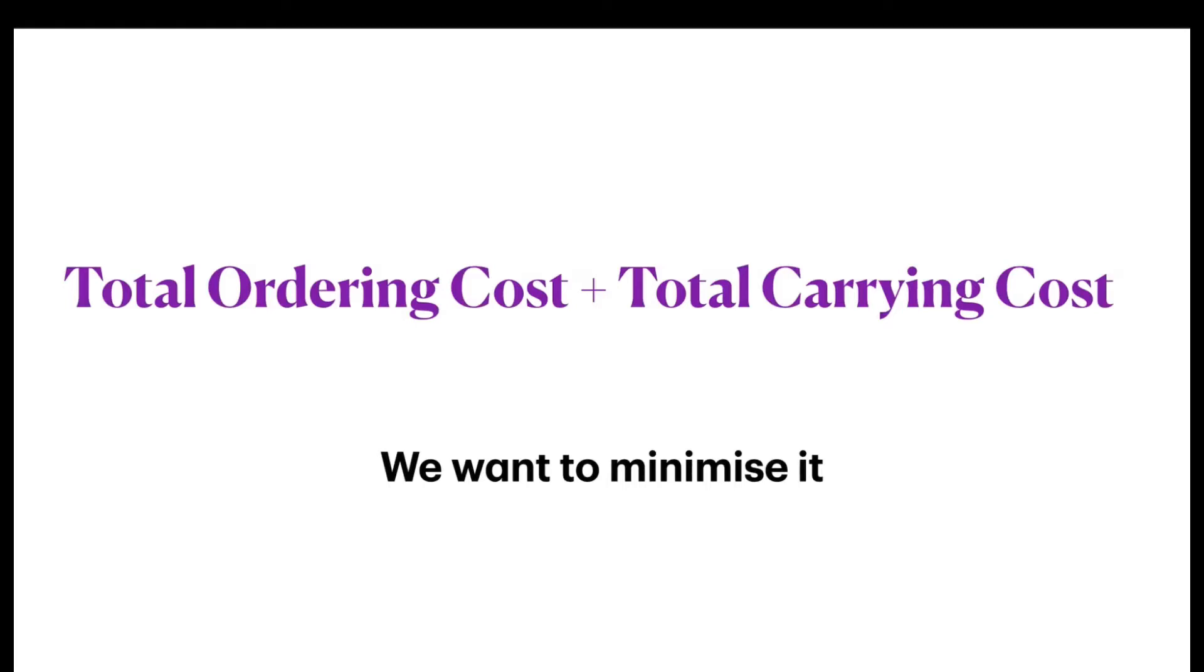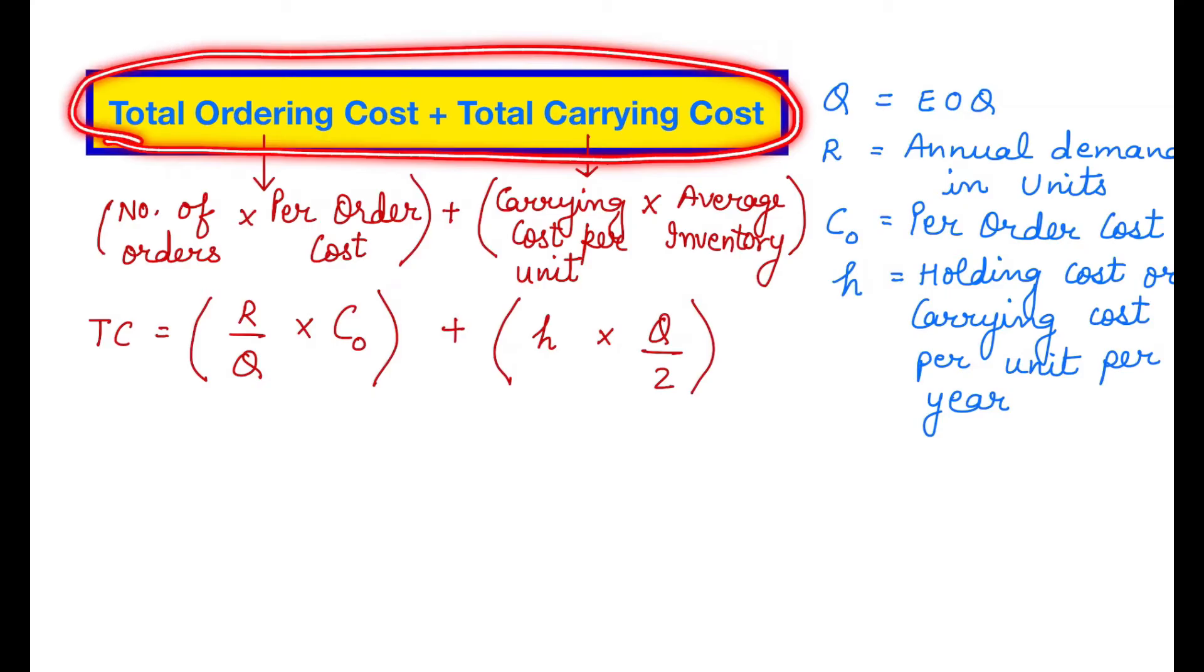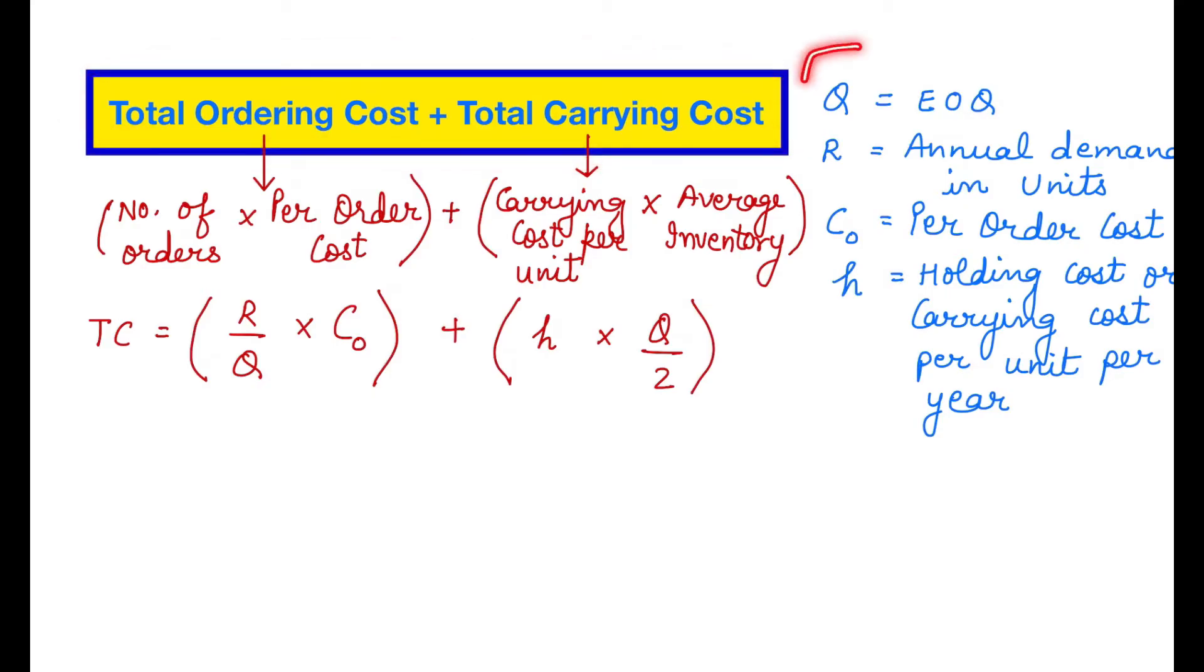So here our main focus will be that the total ordering cost plus the total carrying cost should be minimum. So this is what our objective is and we are going to do it by using the formula. We are interested in finding out the total inventory cost which will be the sum of total ordering cost and the total carrying cost.